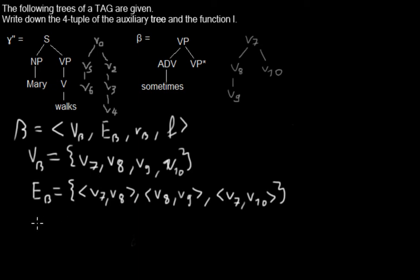And then we have the root node. As you can see the root node is just V_7. And we have a footnote. And the footnote in this case is V_10.